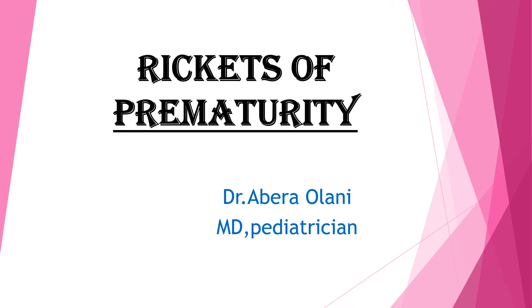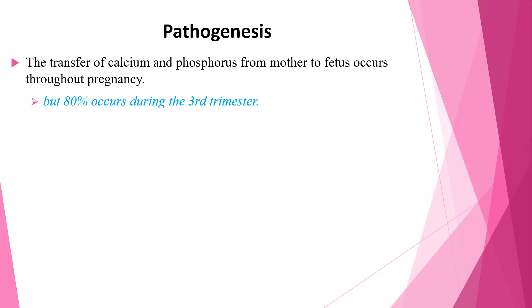Hello everyone, welcome again. Today's lesson is about rickets of prematurity. Rickets in very low birth weight infants has become a significant problem as the survival rate for this group of infants has increased. The transfer of calcium and phosphorus from mother to fetus occurs throughout pregnancy, but 80 percent occurs during the third trimester.